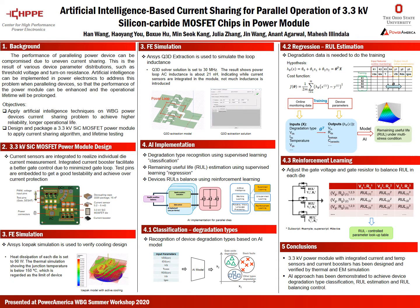Finally, we will apply reinforcement learning for the remaining useful life balancing control. The training process involves changing control variables like gate voltage and gate resistance to observe remaining useful life changes. Then, we will apply proper control variable strategies for each device based on the training results to balance the remaining useful life.